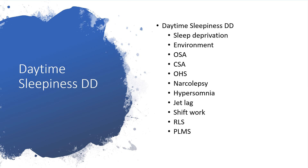Daytime sleepiness — differential diagnosis. If someone is sleeping during the daytime, what are the possible differential diagnoses? I brought this under obstructive sleep apnea because someone who had OSA last night would likely be sleeping during the day. But other possible causes include sleep deprivation or environmental factors, obstructive sleep apnea, central sleep apnea, obesity hypoventilation syndrome, narcolepsy, hypersomnia, jet lag, shift work, restless leg syndrome, and periodic limb movement disorder during sleep.